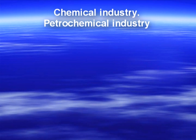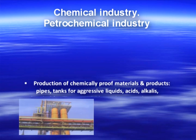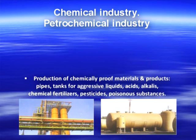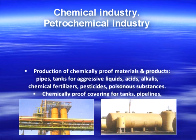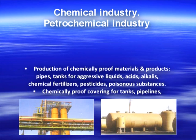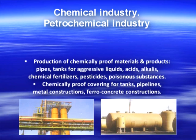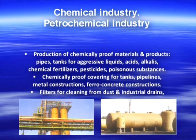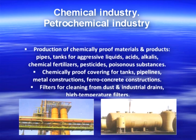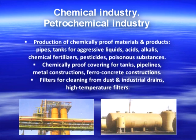Chemical and petrochemical industry: production of chemically approved materials including pipes and tanks for aggressive liquids — acids, alkalis, chemical fertilizers, pesticides and poisonous substances; chemical-approved coverings for tanks, pipelines and metal constructions; filters for cleaning from dust and industrial drains; high-temperature filters.